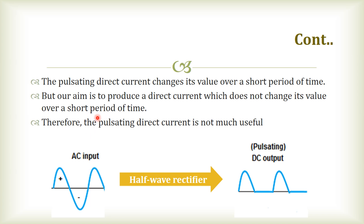But our aim is to produce a direct current which does not change its value over a short period of time. Therefore, the pulsating direct current is not much useful. While giving the alternating current as input for the half wave rectifier, we can obtain positive half cycle as output. The negative half cycle will be blocked.